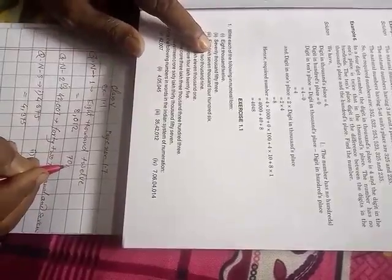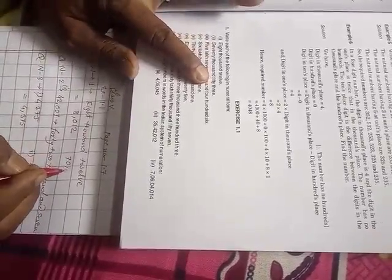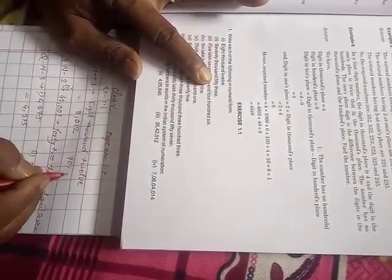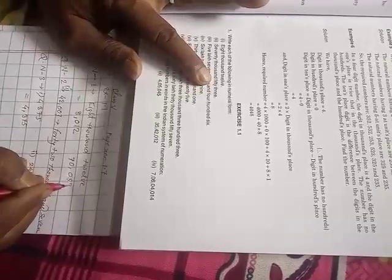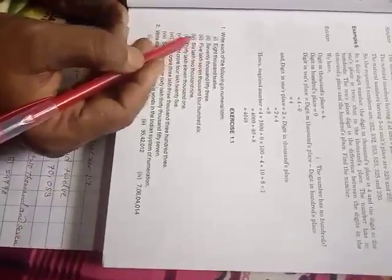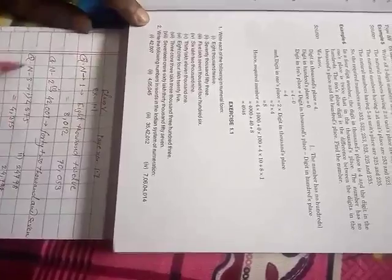Question number two: seventy thousand fifty three. Seventy thousand means seven, zero. Seventy thousand and fifty three - hundred is not given, so write zero, five, three. Similarly, you do questions three, four, five, six, seven, eight.